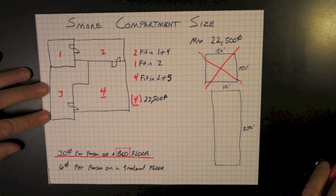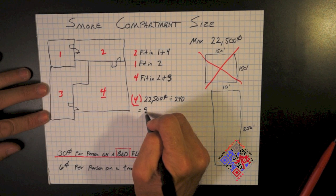So we take Smoke Compartment 4, divide it by our occupant load of 240 square feet per person. That gives us 93 and some change. Well, let's round it up to 94 people.